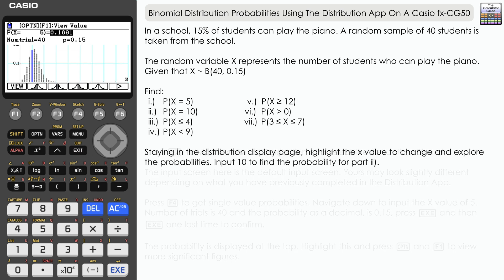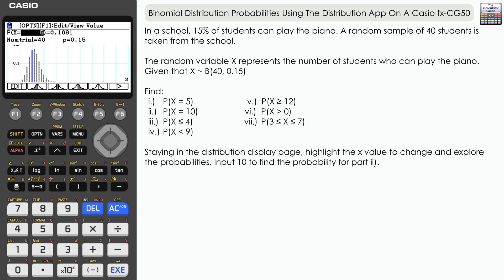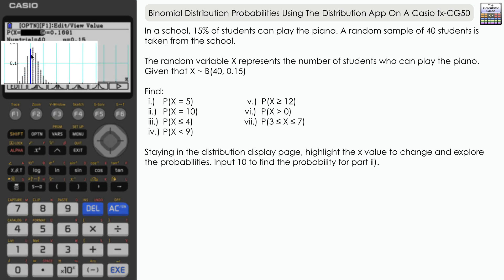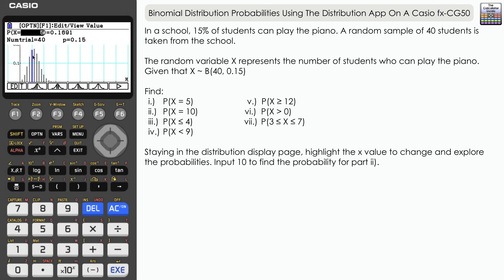Now what you can do within the app, if we scroll to the X value, we can explore some of the other probabilities that we have here. You can see 5 has got quite a tall bar there, it's highlighted in blue, so it's actually quite a likely outcome. We're likely to find maybe 5 people who can play the piano.